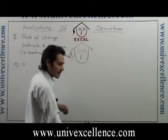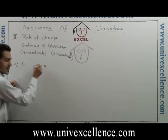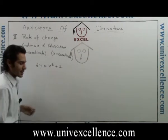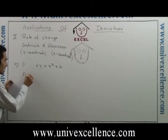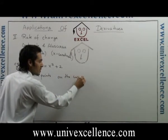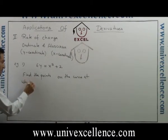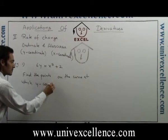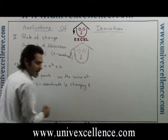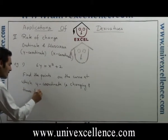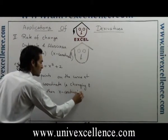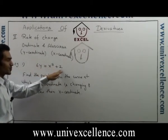For example, consider a particle moving along a curve: 6y is equal to x cube plus 2. We have to find the points on the curve at which the y-coordinate is changing 8 times faster than the x-coordinate.